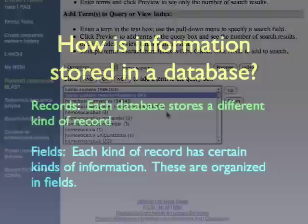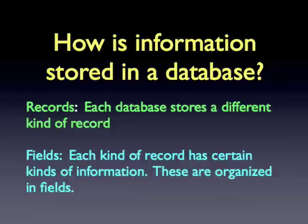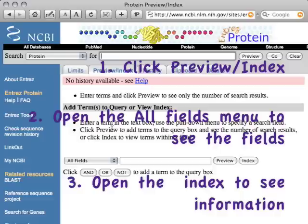To summarize, we have found that different kinds of databases have different kinds of records, and records have their own unique kinds of fields. To see these, we go to the database, we click the Preview Index tab, we open the All Fields menu, and we open the index to see how the information is listed in the different fields.